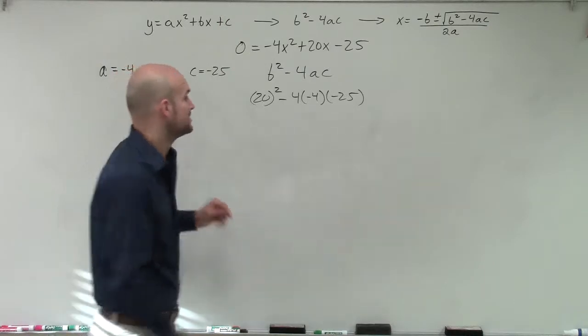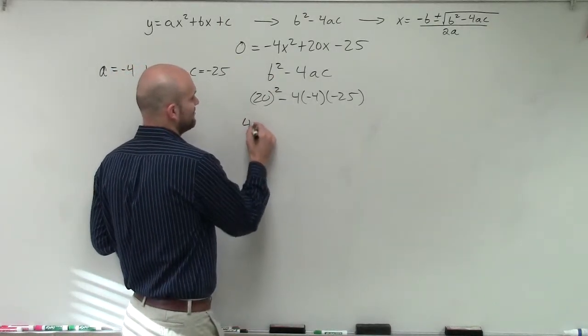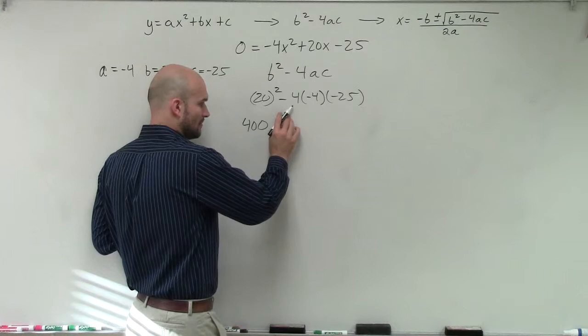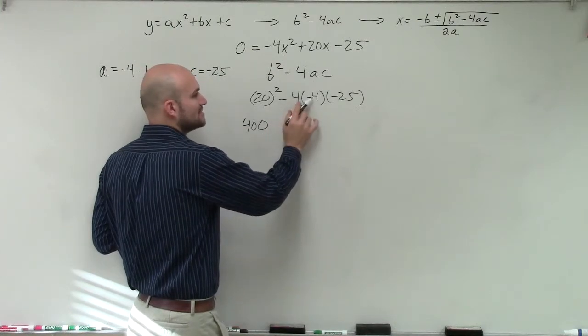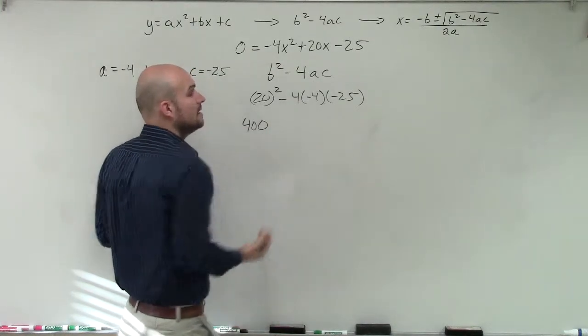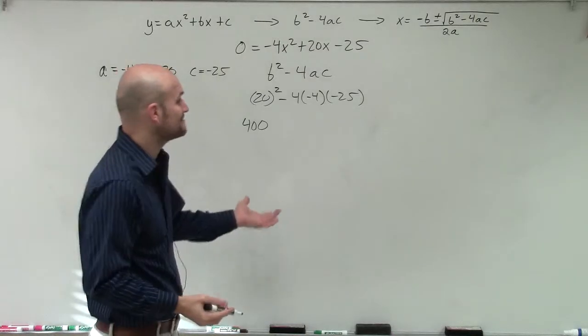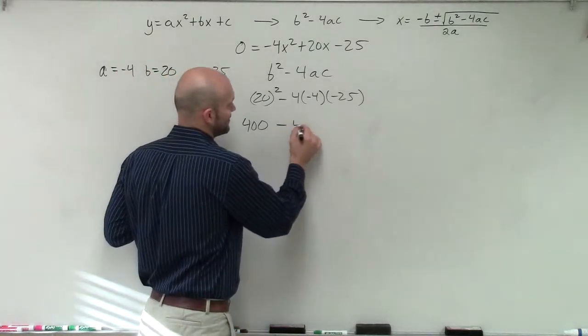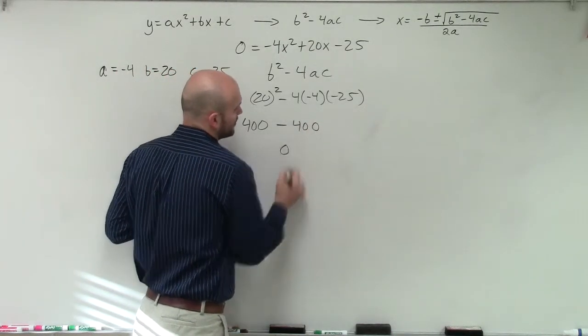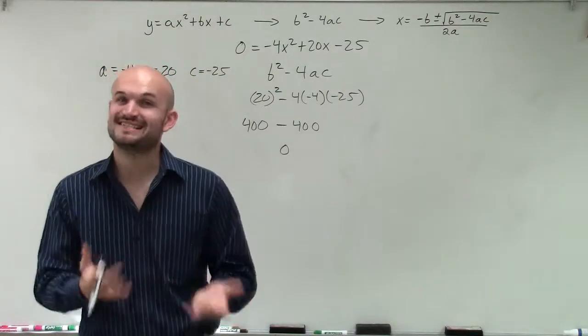Now I just need to complete this. So I have 20 squared, well that's going to be 400. And then negative 4 times negative 4 is a positive 16. Positive 16 times a negative 25 is going to be a negative 400. Therefore, we're going to have a discriminant value of 0.